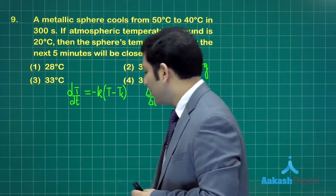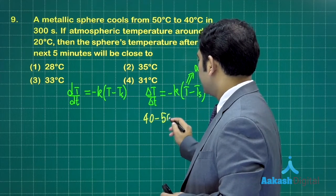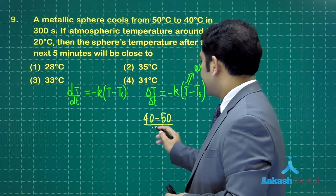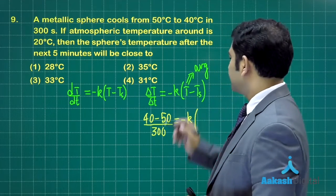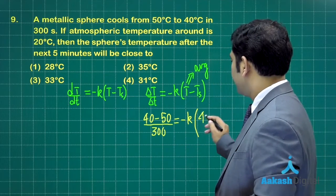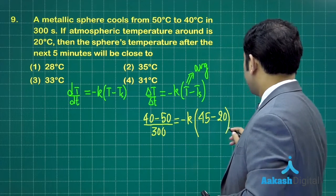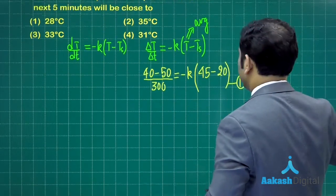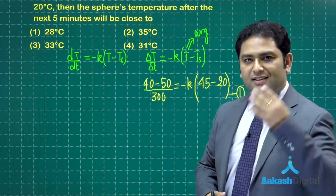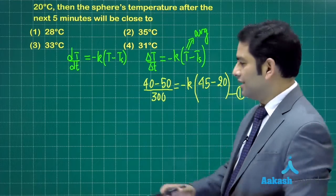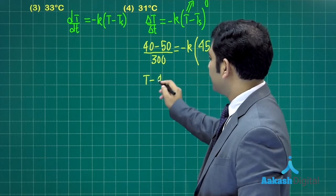Now let me show how we're going to proceed. In the first case, 50 to 40, so that is going to be (40 - 50)/300 seconds = -k times the average temperature. 40, 50 - the average temperature would be 45 - and the surrounding temperature, that's 20. We call that equation number one. Now in the second case, the temperature has already become 40. In the same time span, 5 minutes, we've got to calculate the temperature.